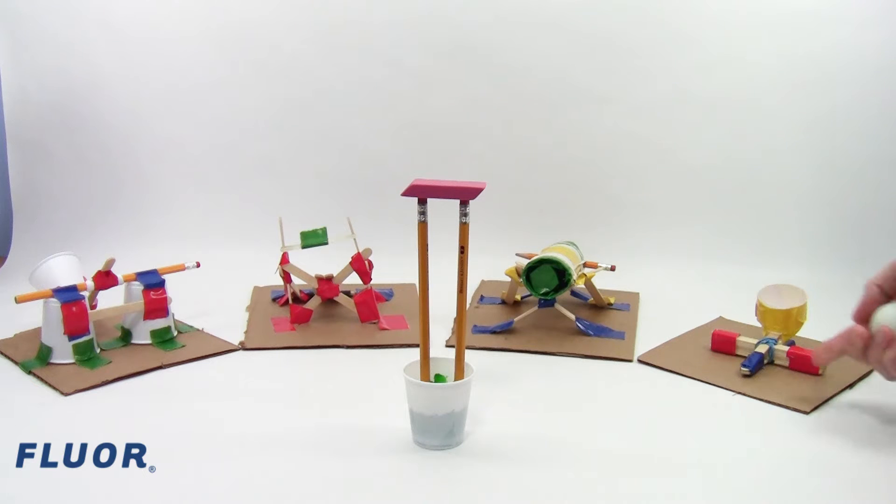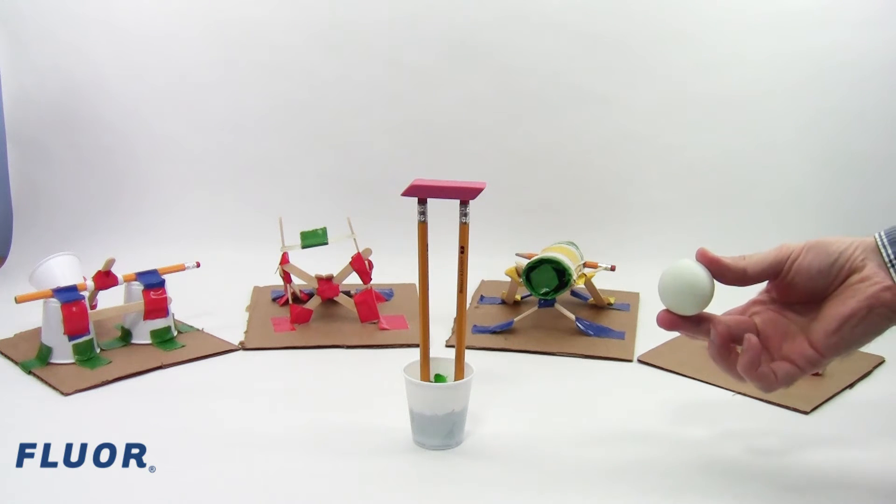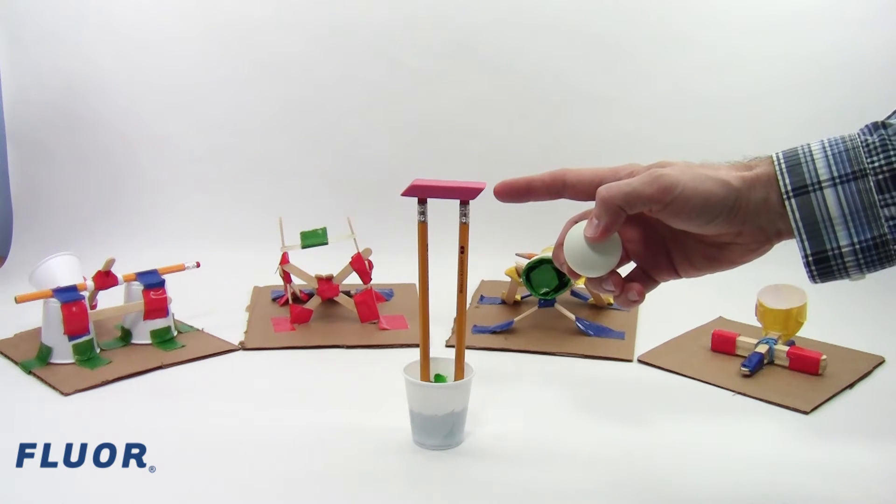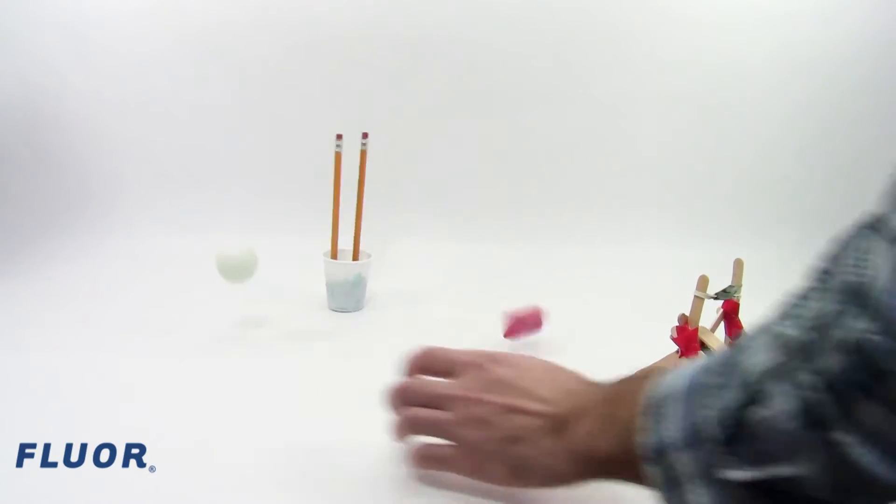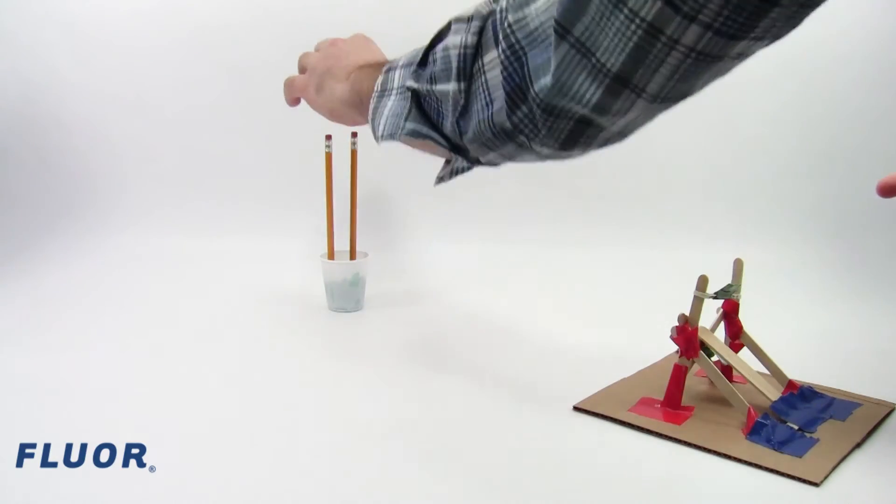Your goal is to build a machine that can launch a ping pong ball and knock an eraser off a target called a wicket. You will try to knock the eraser down as many times as possible within a 3 minute time limit.